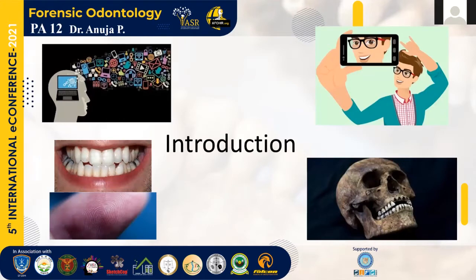With increasing advancements in technology, there's a constant evolution in the methods of identification, especially with regard to forensic odontology. With the advent of selfies, it has made capturing smiles all the more effortless and accessible. The human dentition is a unique tridimensional apparatus because of variations in size, shape, and position of teeth. Therefore, the dental traits are considered as unique as fingerprints. Also, resistance of teeth to fire and decomposition renders them extremely useful for identification purposes.